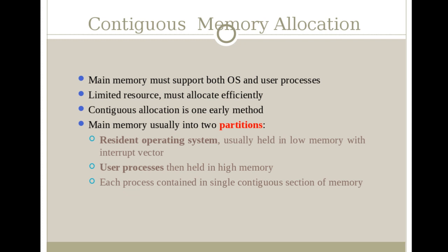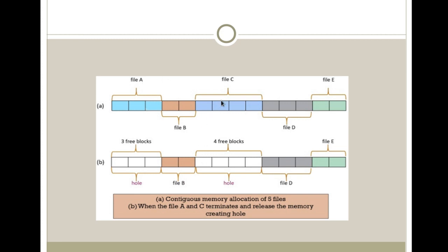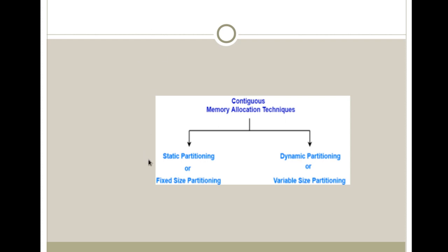Next I will discuss contiguous memory allocation, which is one of the oldest memory allocation schemes. In this scheme, consecutive memory blocks — that is, memory blocks having consecutive addresses — are assigned to a process. In contiguous memory allocation, we can use either fixed size partitioning or variable size partitioning. Fixed size partition uses partitions of equal size, and in variable size partition scheme, partition size varies.